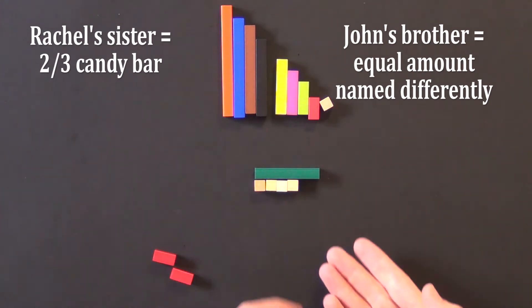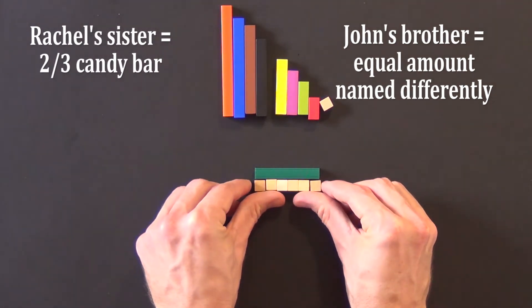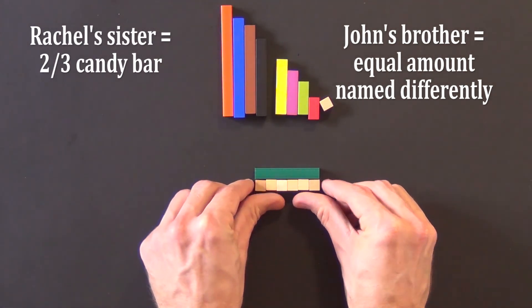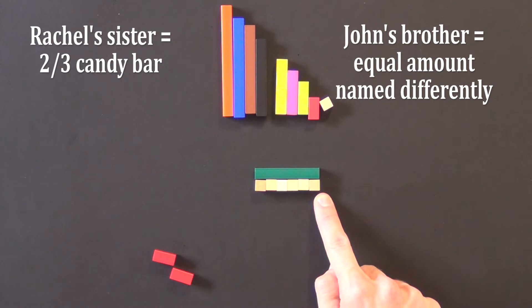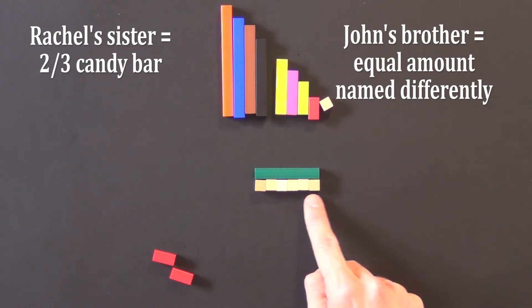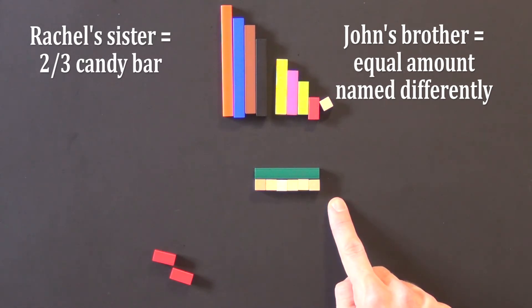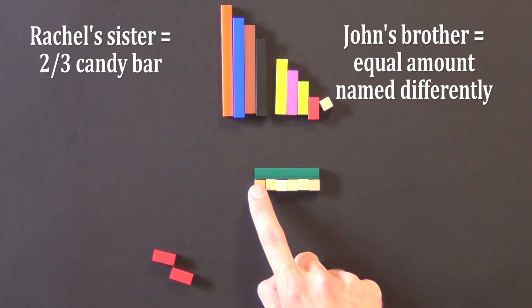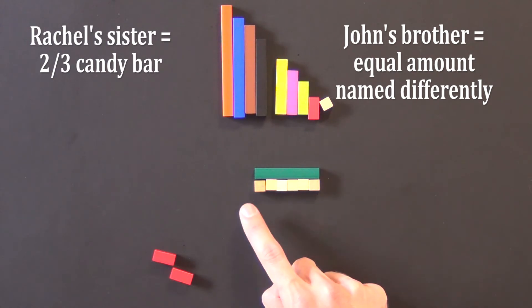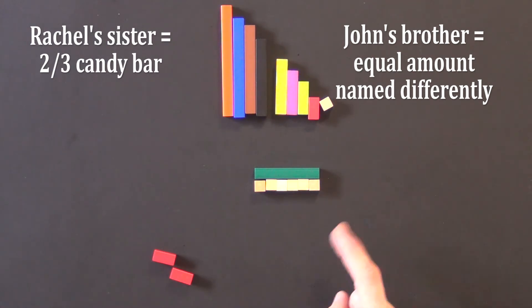We know that John gave his brother a part of his candy bar that was equal in value to what's being represented here, but it was named differently. So is there any other way that we can represent this same length? Is there another rod we can use? If I choose to pull out the white rods, I can line them up right underneath the red rods, and it's equal in length. So I know that this amount could represent what John gave his brother. How would I name what these white rods are? I need to compare them to the whole. How many white rods would it take to equal the length of the whole? I can fill in what's missing, and I see that it takes six white rods to equal the length of the dark green. This means that each rod is a sixth because it repeats itself six times.